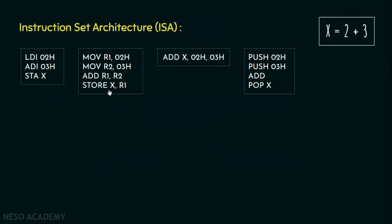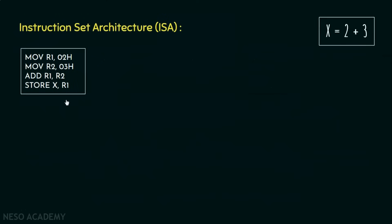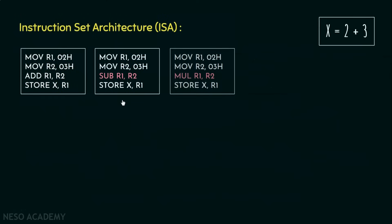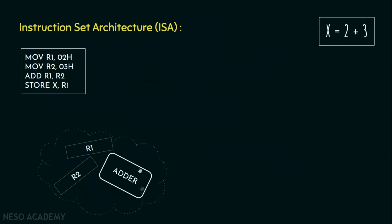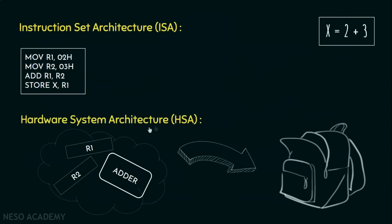Suppose this one is selected, so all the other operations will also have similar types of instructions. Now based on this, the hardware will be chosen. In this specific case, we will need at least two different memory locations and an adder circuit. This is the rudimentary concept of hardware system architecture, or the HSA.